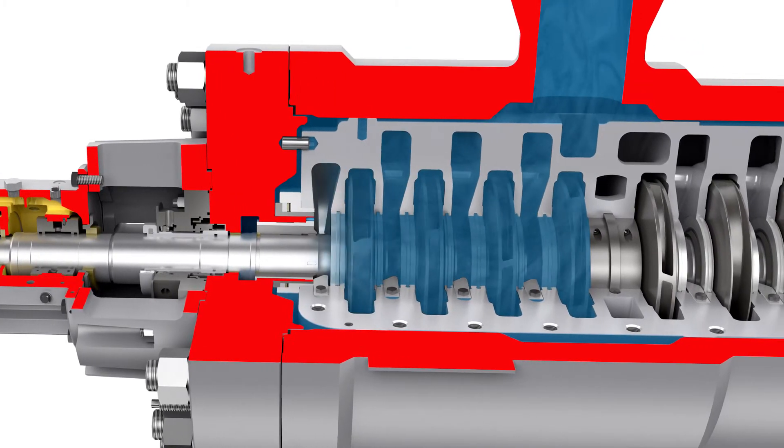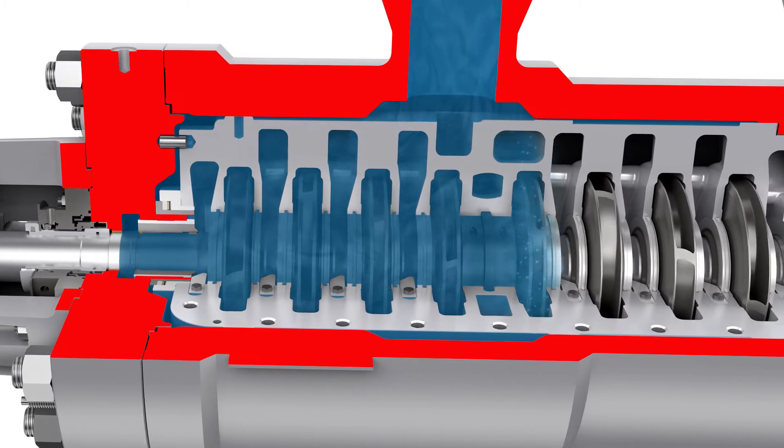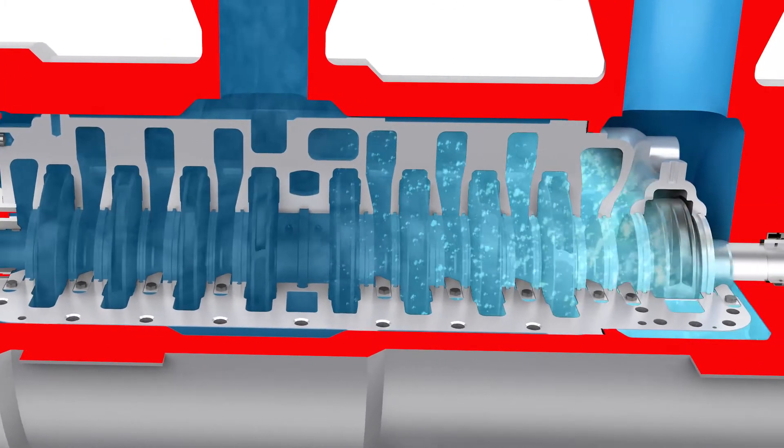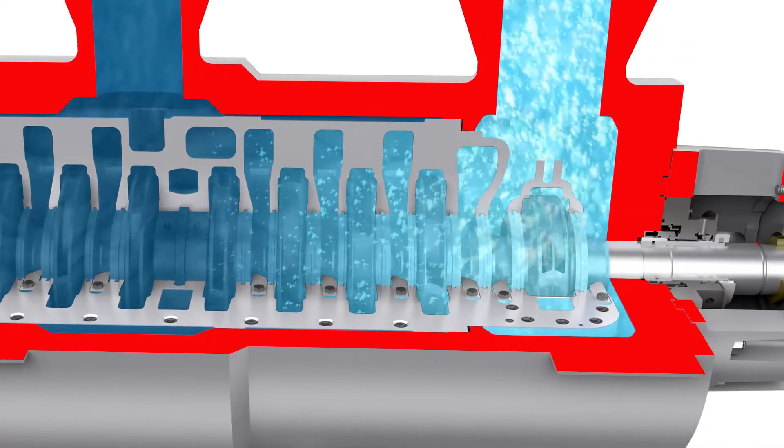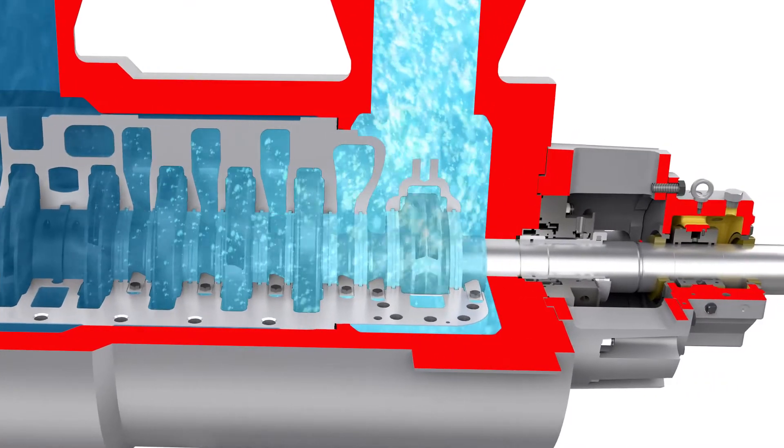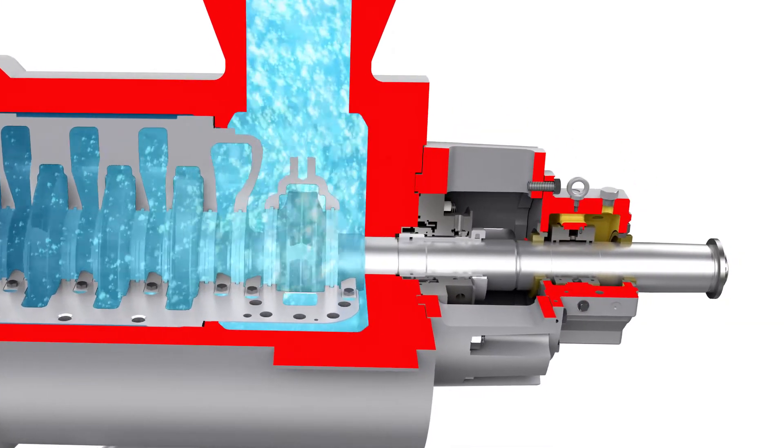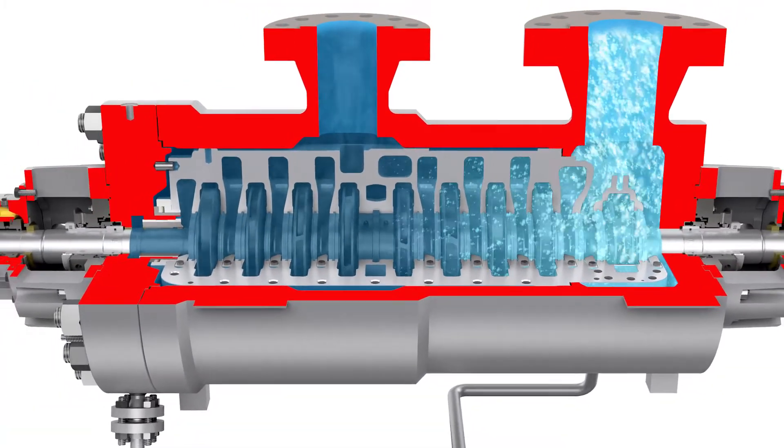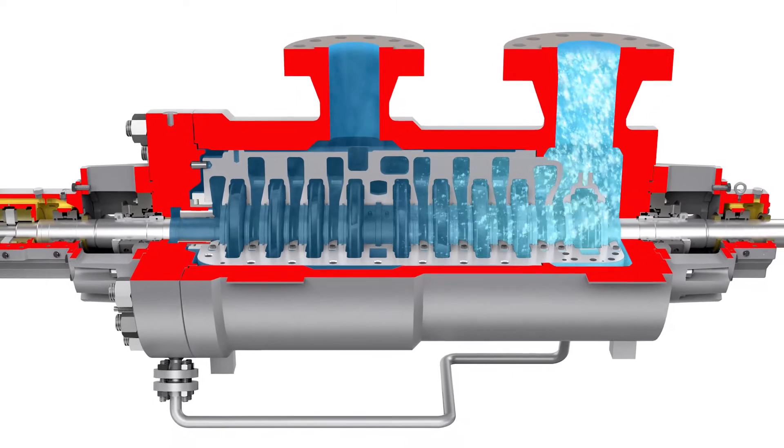However, effluent streams from reactors are not always single phase. Vapour evolves from the liquid as the pressure of the fluid stream drops across the HPRT. By volume or gas void fraction, the amount of vapour at the turbine's outlet pressure can be quite substantial, 60% by volume or more.